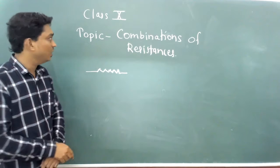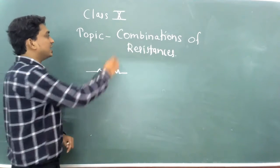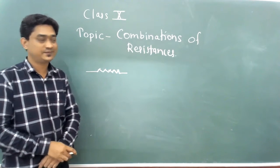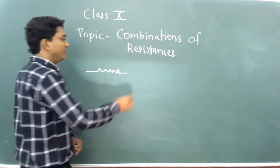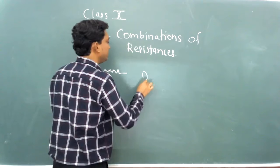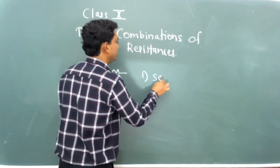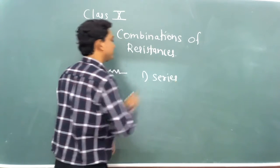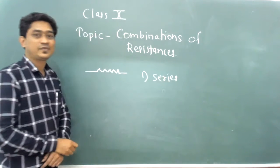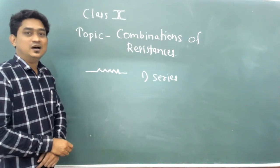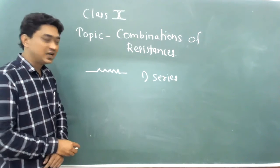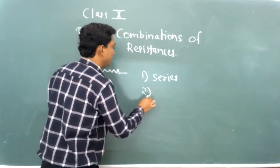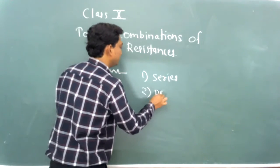Now there are two types of combinations of resistances. The first type is series combination, and the second type is parallel combination.